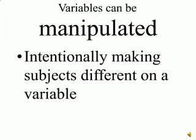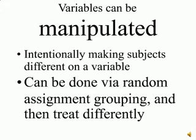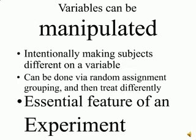Variables can also be manipulated — in other words, this is when we intentionally make subjects different on a given independent variable. Perhaps the best approach is to randomly assign the subjects in our sample to two different groups and then treat those groups differently. This manipulation of an independent variable is the essential feature of an experiment. If there is no manipulation of an independent variable, don't call the research an experiment.